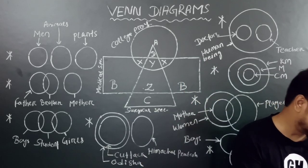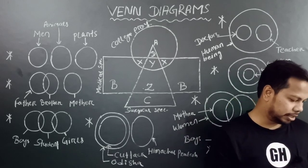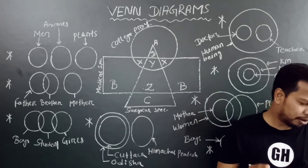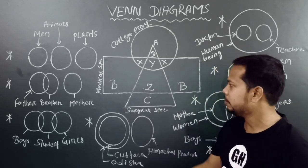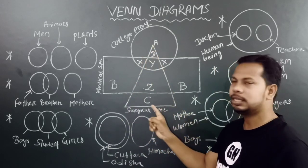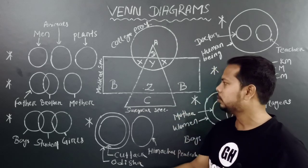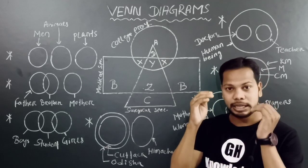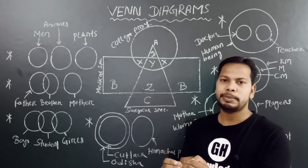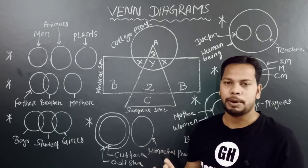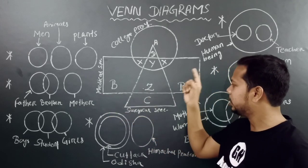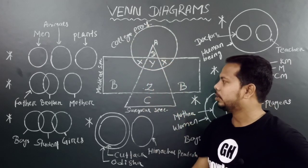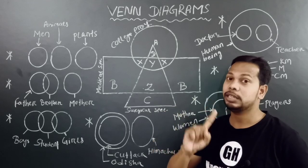Next question: surgical specialists who are also medical specialists, but not professors, are represented by which region? Surgical specialist is represented by triangle, rectangle represents medical specialist. So the region meaning surgical specialist and also medical specialist, but not college professor is the correct answer.